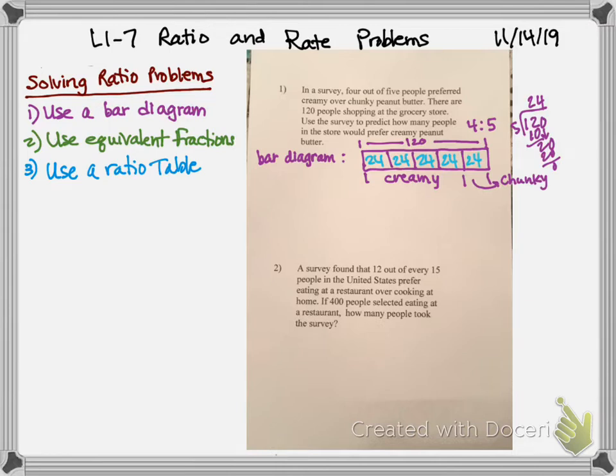So what I find out is 24 is in each one of these sections. So if I want to figure out how many people choose creamy, I'm just going to take that 24 and there's four sections of it that chose the creamy. So if I multiply them, I get 96. So I would be able to conclude 96 people surveyed prefer creamy peanut butter.